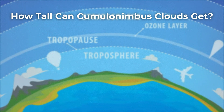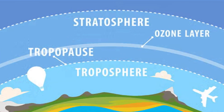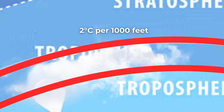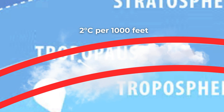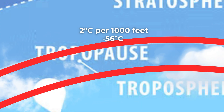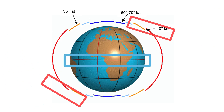Cumulonimbus clouds can climb to staggering heights, in certain cases reaching the tropopause — the boundary between the troposphere and the stratosphere. Most weather occurs within the troposphere, due to a relatively linear temperature loss with altitude gain of around 2 degrees Celsius per 1,000 feet. Above the tropopause, in the stratosphere, temperature stays relatively constant at around minus 56 degrees Celsius. Importantly, the height of the tropopause changes based on your location.